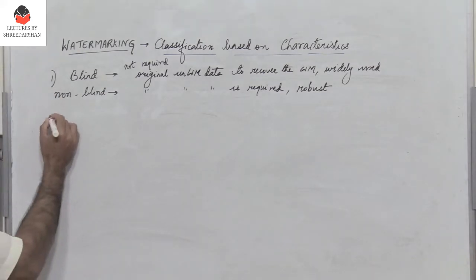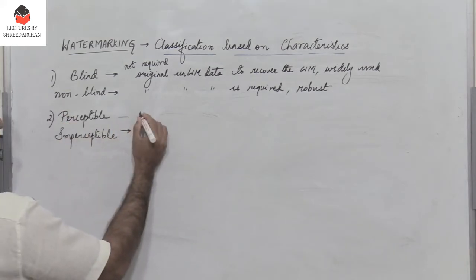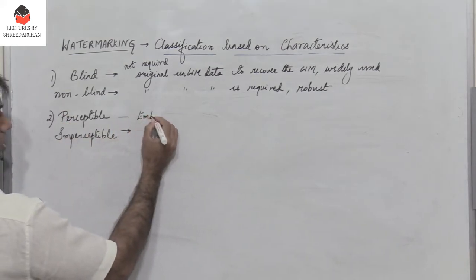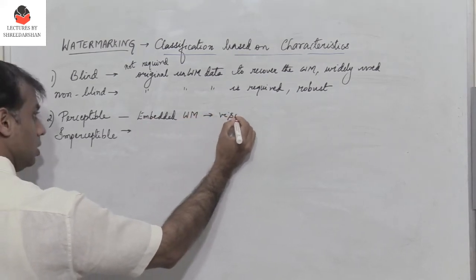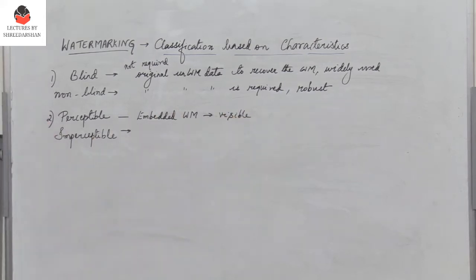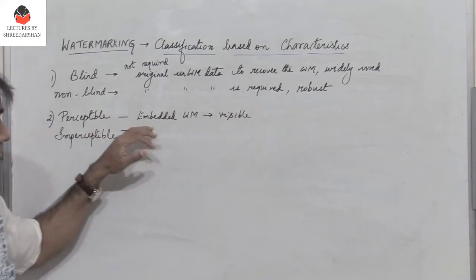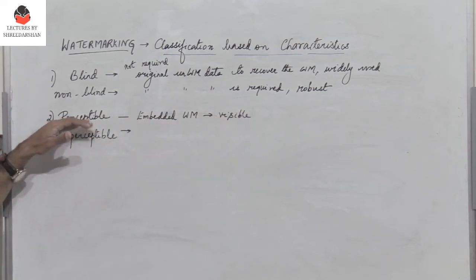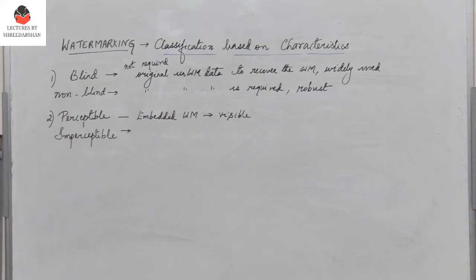The next classification is perceptible versus imperceptible. If the embedded watermark is visible to the human eye, we say that such a watermark is perceptible. A good perceptible watermark must be difficult for any unauthorized person to remove and should be able to resist falsification.